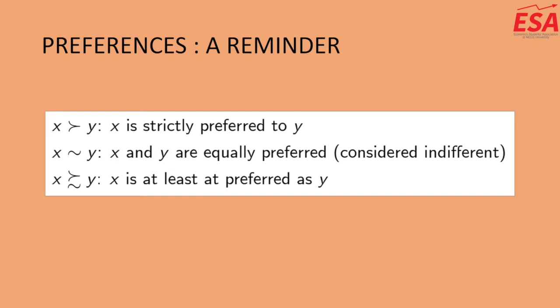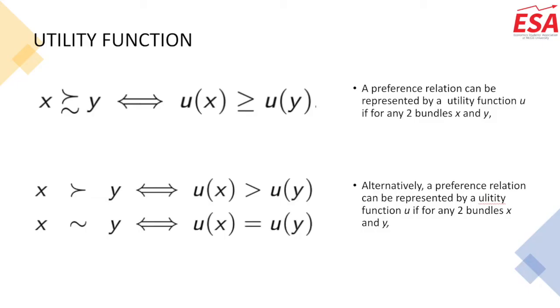What we're looking at now is a representation of this in terms of basic mathematical operators. Essentially, a preference relationship can be expressed as a utility function U if, for any two bundles X and Y, the utility of good X is greater than or equal to the utility of good Y. We have strict preferences if the utility of good X is strictly greater than the utility of good Y, and indifference when the utility of good X equals the utility of good Y.